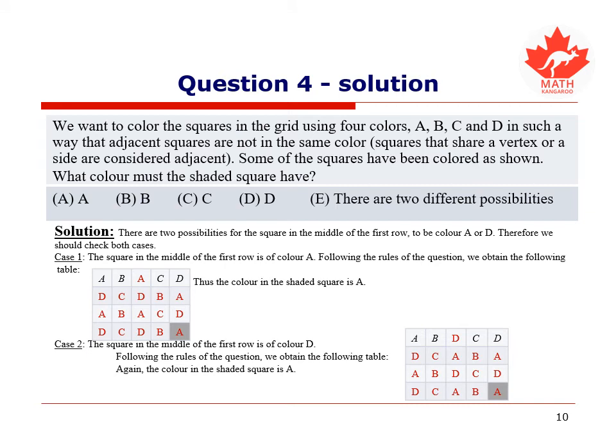Where we also see that the color in the shaded square also happens to be A. Therefore, since the shaded square in both case 1 and case 2 is A, the answer to this question is A.